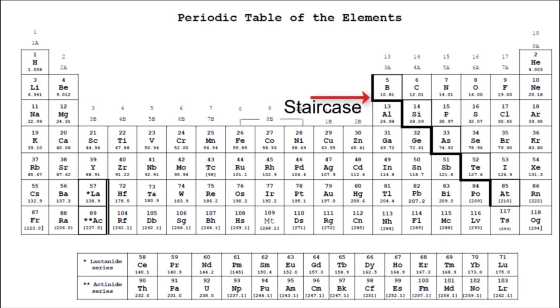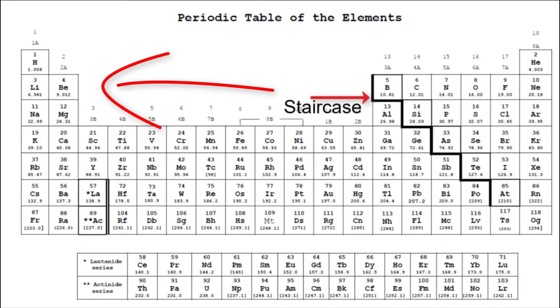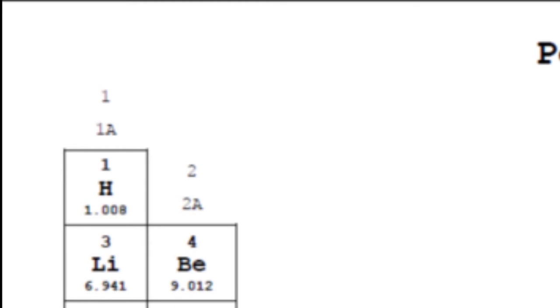Looking at it, all the elements to the left of the staircase are metals and they will form cations. Please be aware that hydrogen is a nonmetal.